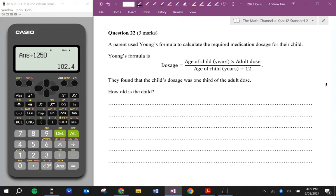A parent used Young's formula to calculate the required medication dosage for the child. They found that the child's dosage was one third of the adult's dose. How old is the child? Well let's just make up some numbers. I'm just going to say the dosage is 1, so the adult dosage is 3. So if we have 1 is equal to the age of the child times the adult dosage over age of the child plus 12. I'm going to multiply both sides by a plus 12. a times 3 is 3a. I'll subtract a from both sides, I'll divide both sides by 2. So, 6 years old.